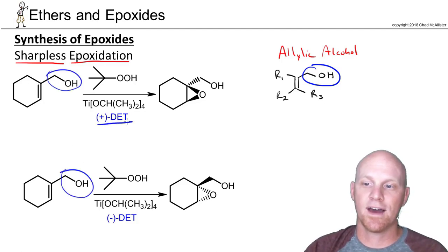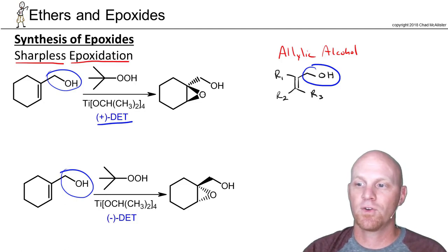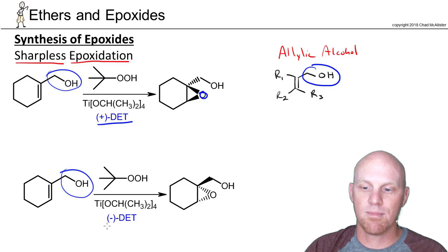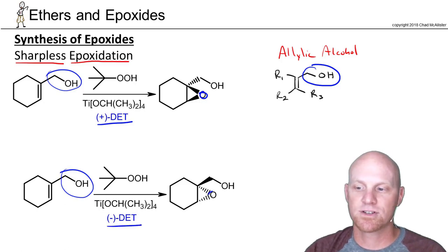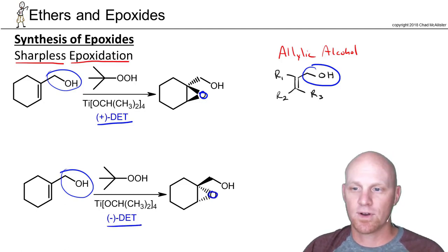Then if you use plus diethyl tartrate, your oxygen is going to end up on top for your epoxide. If you use minus diethyl tartrate then your oxygen is going to end up on bottom. So it turns out your plus enantiomer of diethyl tartrate and your minus enantiomer of diethyl tartrate being chiral themselves, they can provide a chiral environment where only one version of the epoxide is possible to form. So that's kind of the deal here.